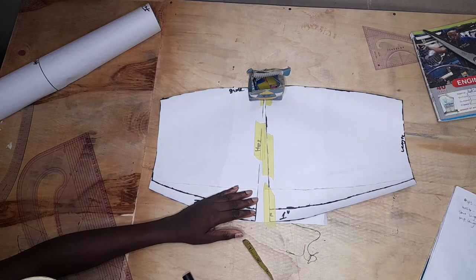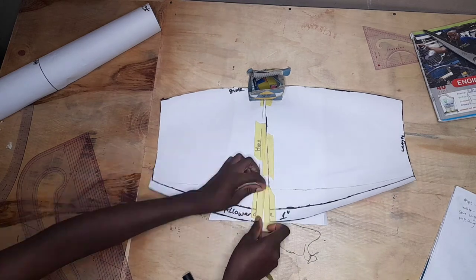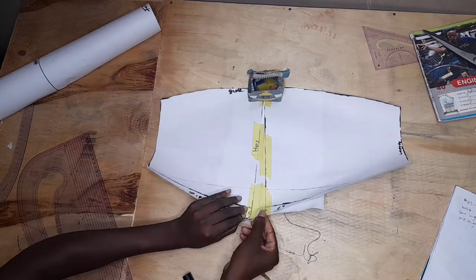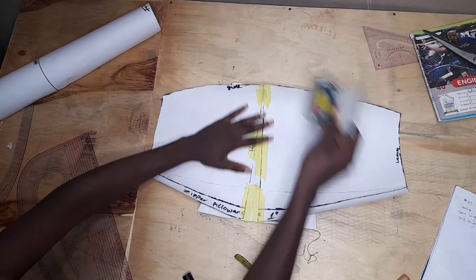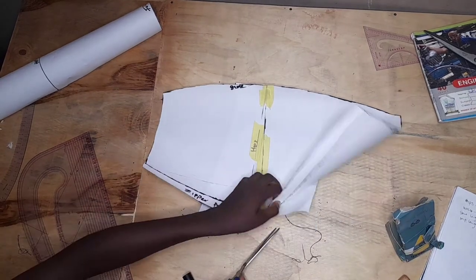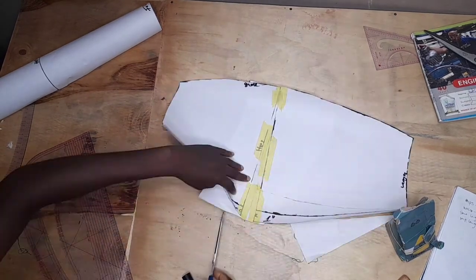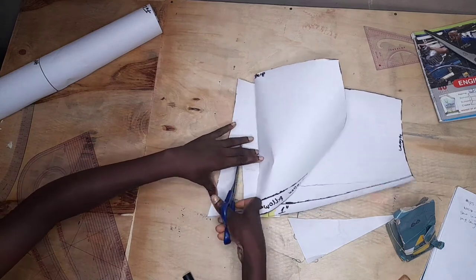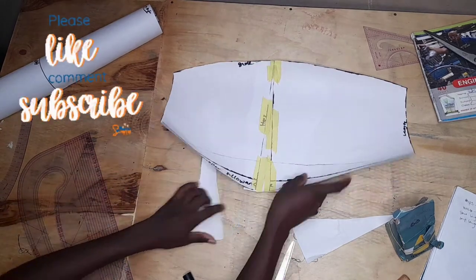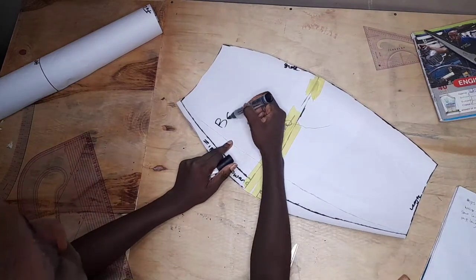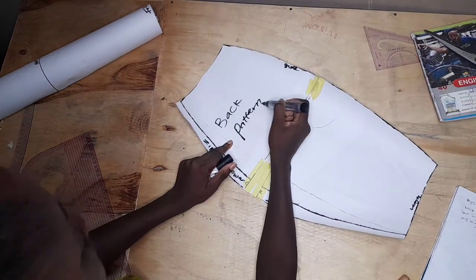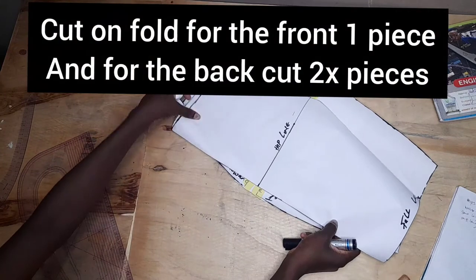After doing that, your skirt pattern is ready. Whenever you're cutting the fabric, make sure you add your seam allowance, your hem allowance as well. You can also just add everything before cutting the pattern. Don't forget to label the back from the front, and if you're making it for a client, you should also write the client's name before packing it up.